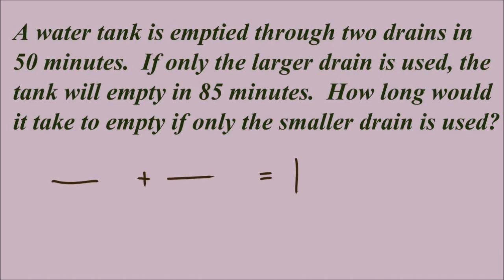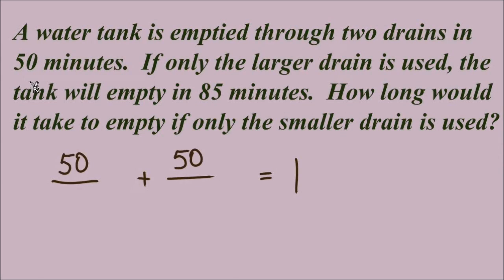Here's our next example. A water tank is emptied through two drains in 50 minutes. If only the larger drain is used, the tank will empty in 85 minutes. How long would it take to empty if only the smaller drain is used? The time working together — 50 minutes — goes in both numerators. We know one drain working alone takes 85 minutes. The other drain working alone is the unknown, so that goes in the second denominator as x.